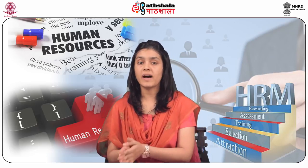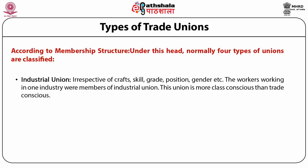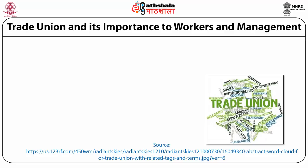Staff union gained popularity by taking women workers as their members. Third, industrial union — irrespective of crafts, skills, grades, position, or gender, the workers working in one industry were members of industrial union. This union is more class-conscious than trade-conscious. Fourth, general union — it covers all types of industries; labor class people from any type of industry can be members of the general union. It is more open than the industrial unions and their numerical strength is high.